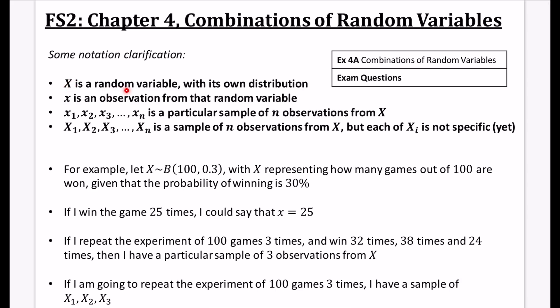If we have a capital letter X, it is a random variable with its own distribution. So when we're talking about capital X, we're kind of talking about the whole collection of potential things that could be selected from that. As soon as we go to a lowercase value, lowercase x here, it becomes a particular observation from that random variable.